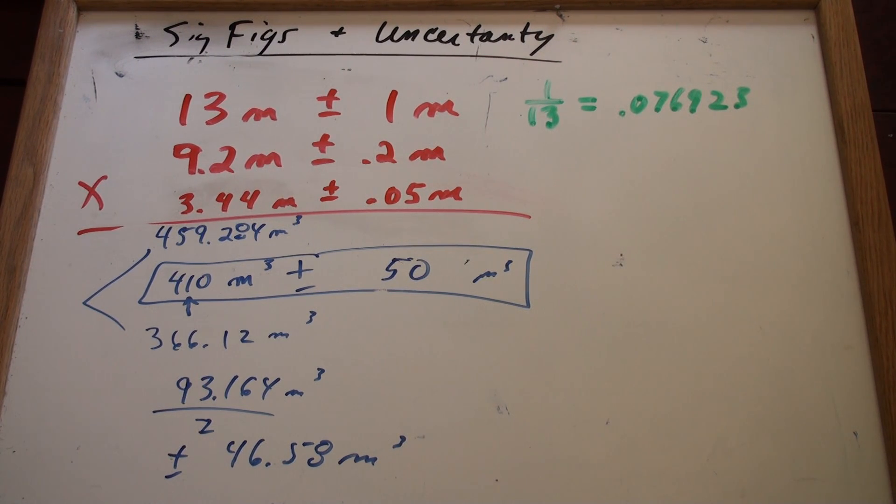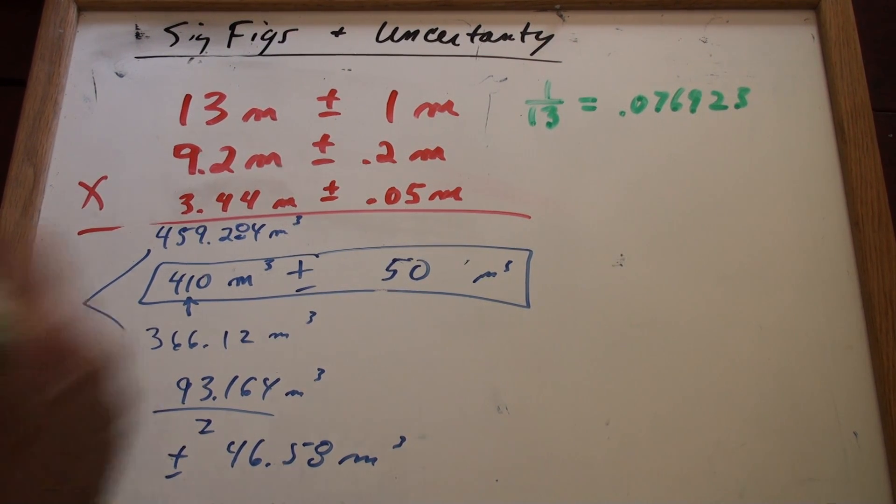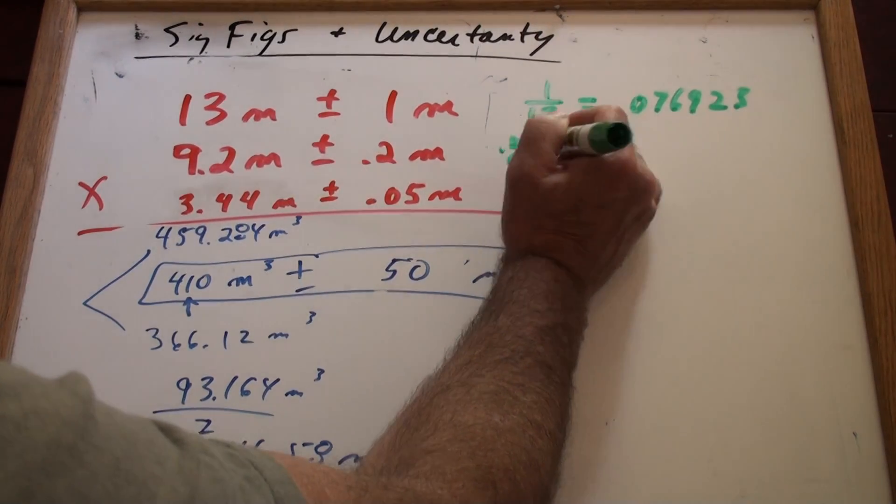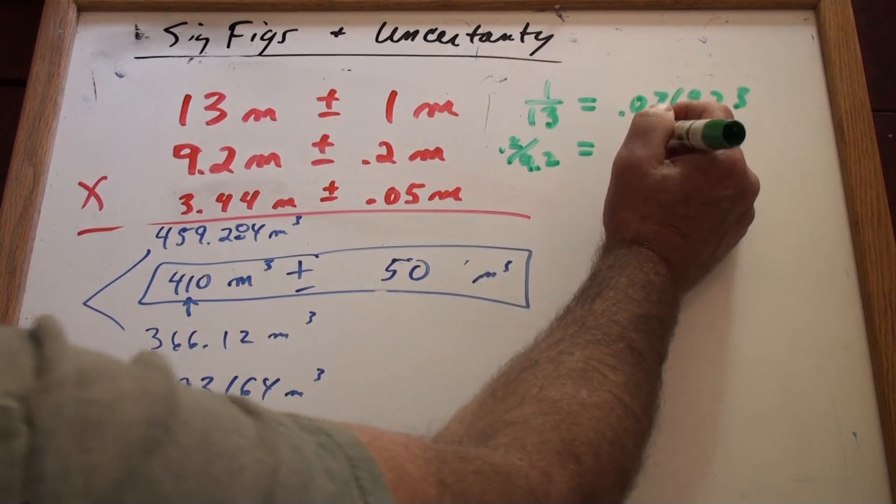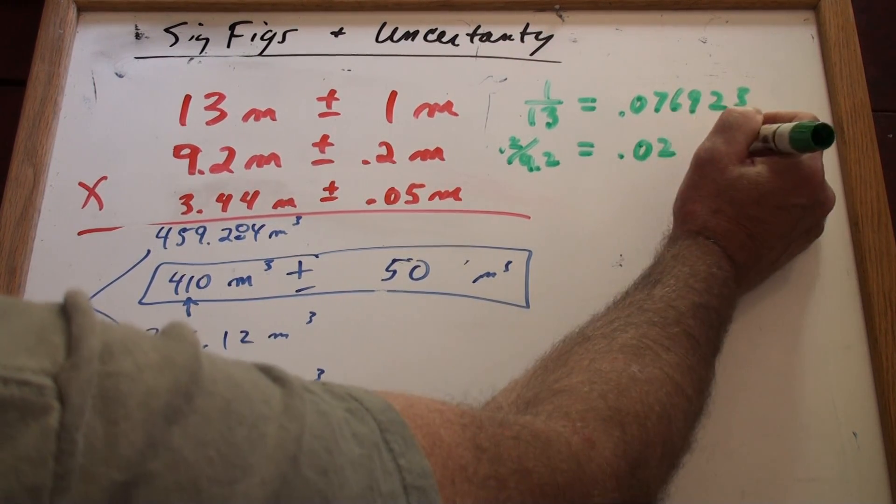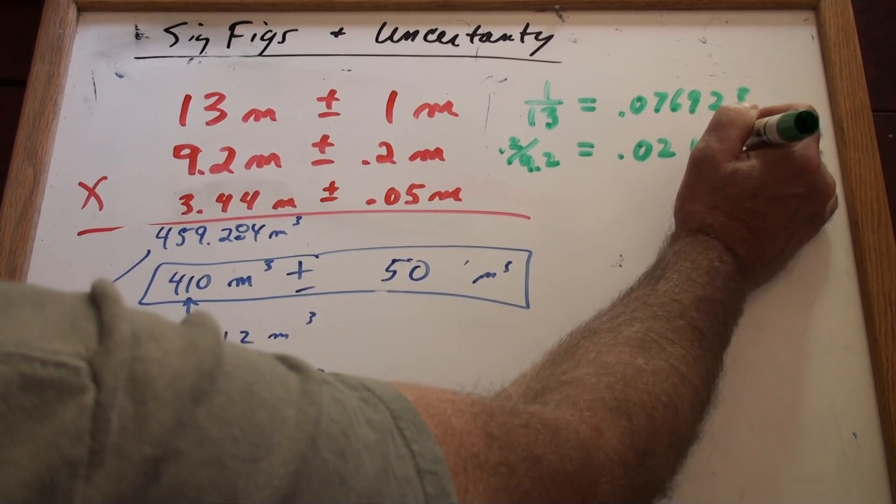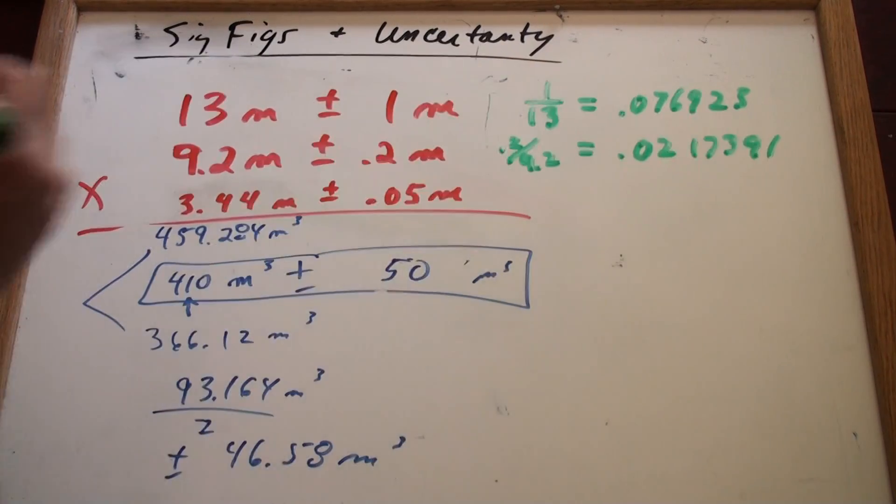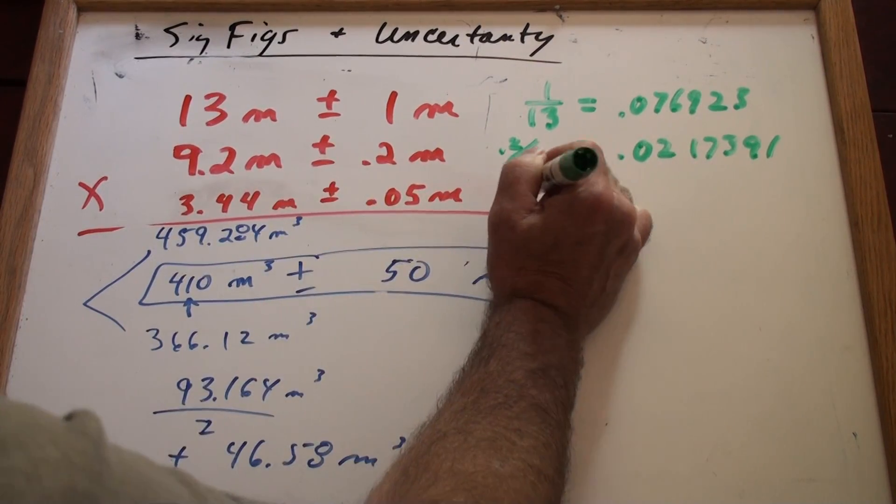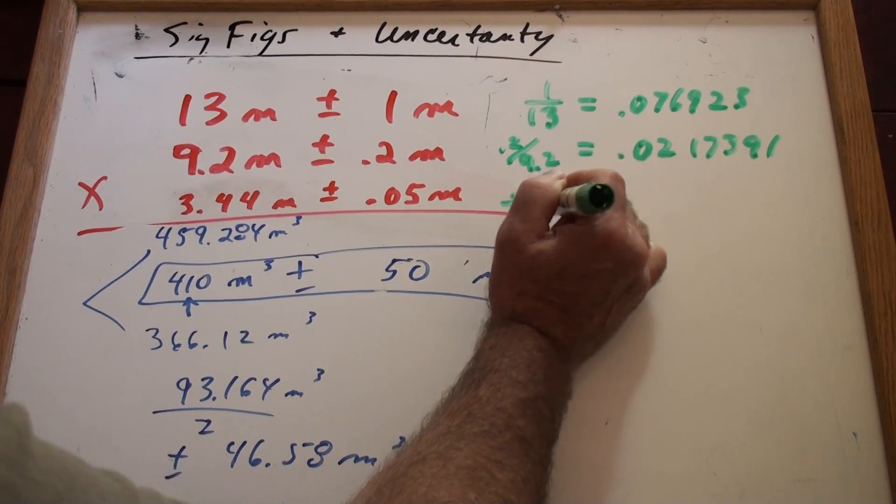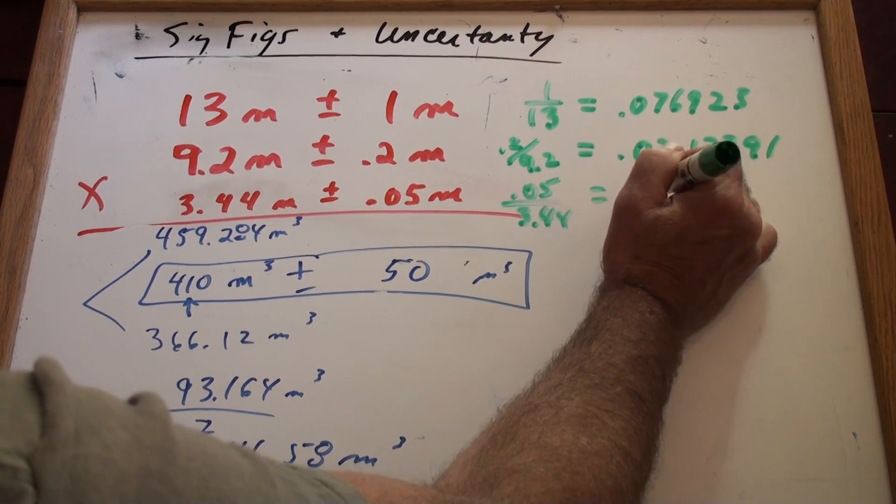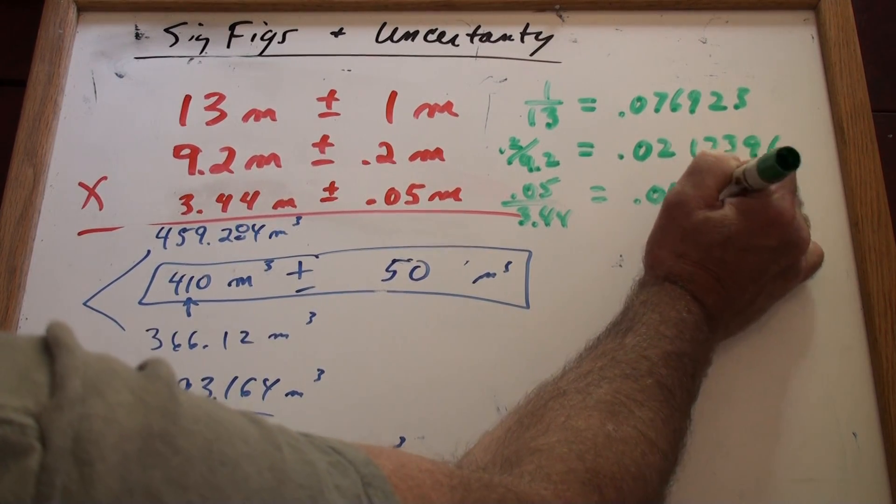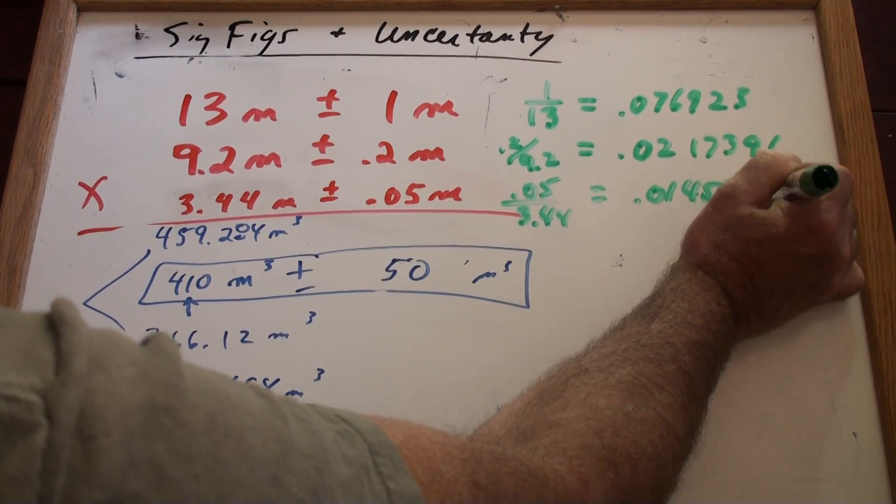if you do the 9.2, you take 0.2 and you divide by 9.2, you end up getting the percent uncertainty for that, which is 0.0217391 if you don't round. What if you took 0.05 and you divide it by 3.44? Then you get that percent uncertainty, which is 0.0145348.